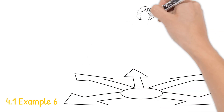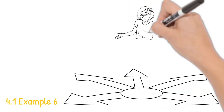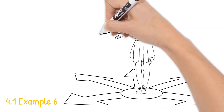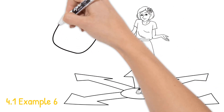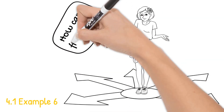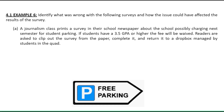4.1 Example 6: Identify what's wrong with the following surveys and how the issues could have affected the results of each survey. Part A: A journalism class prints a survey in their school newspaper about the school possibly charging next semester for student parking.